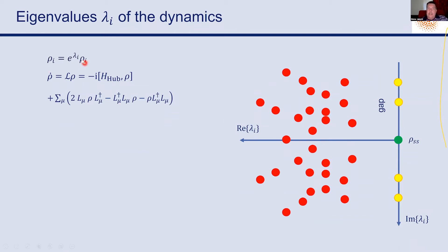With this dissipation, many eigenstates damp out over time and don't play a role in the long-term dynamics. Usually what we're left with after adding such a damping term is a stationary state at the origin of the complex plane, which does not evolve anymore. All observables acquire a stationary value — that's the ergodicity I discussed before.